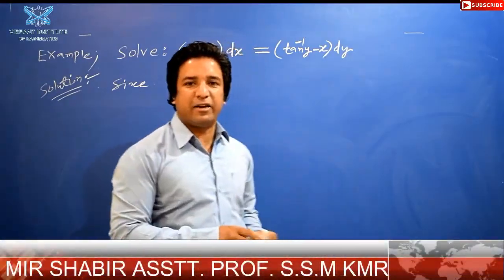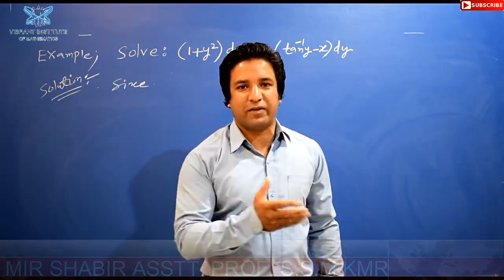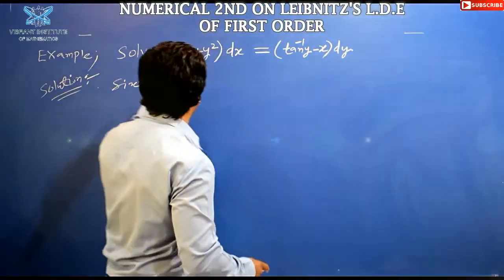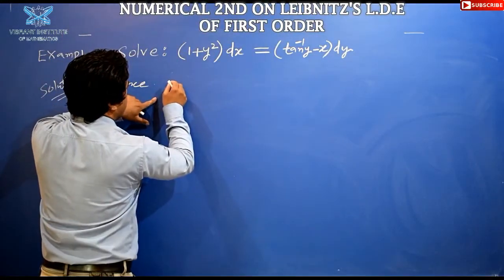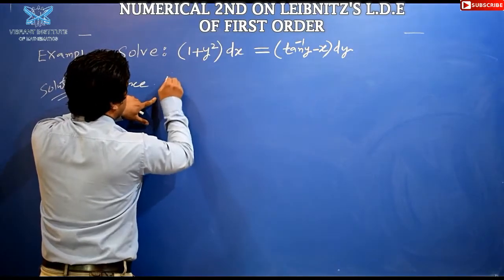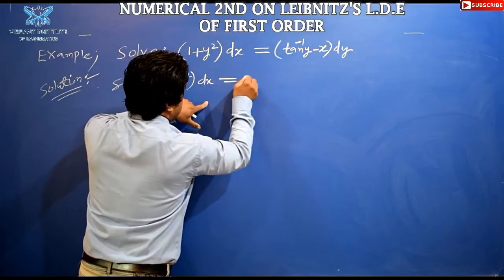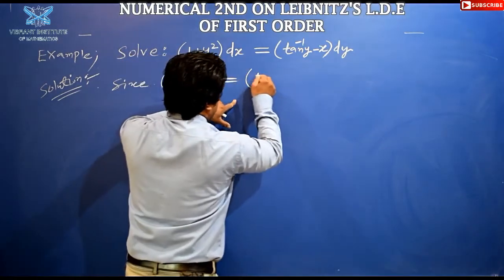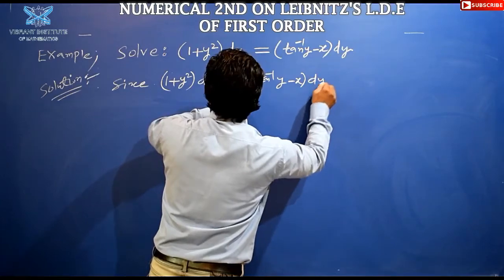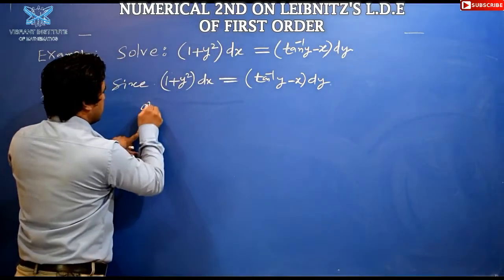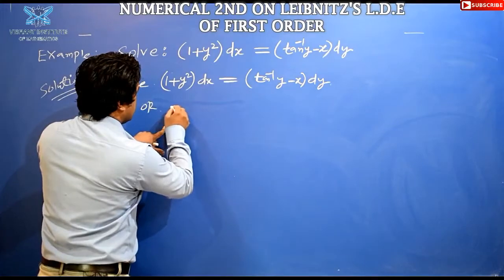This is the second numerical for the same lecture on linear differential equations of first order. The equation can be written in the form: (1 + y²) dx = (tan⁻¹y − x) dy.